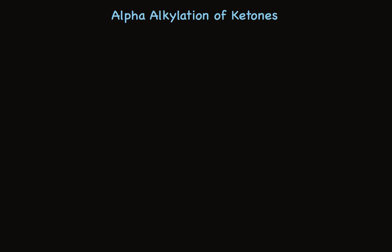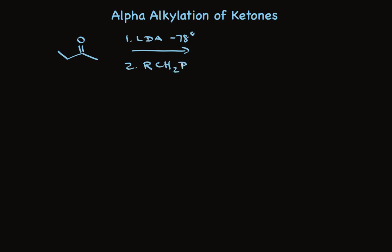Ketones are readily accessible, and the alkyl halides that we need are also readily accessible. As an example, let me talk about the alkylation of 2-butanone. The ketone is first treated with a very strong base at cold temperatures, which irreversibly removes an alpha proton. The second step involves adding an alkyl halide, and the result adds the alkyl part of the alkyl halide to an alpha carbon. So here's the new carbon-carbon bond.